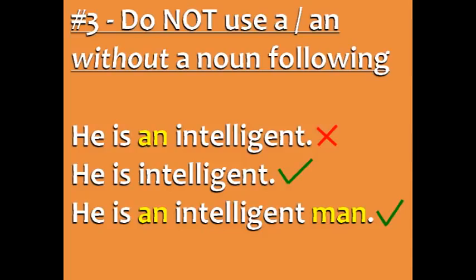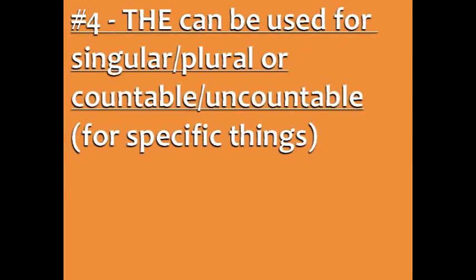Here's another example. 'He is an intelligent' is not possible because intelligent is an adjective and there is no noun. Instead, say 'he is intelligent' or 'he is an intelligent man.'